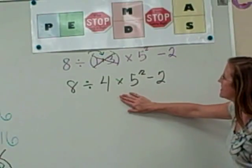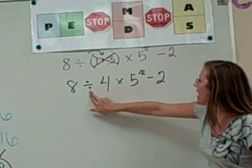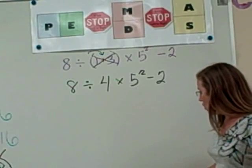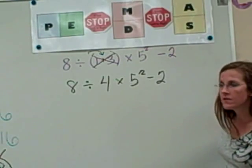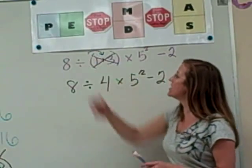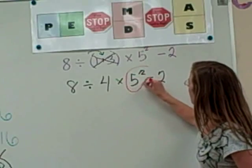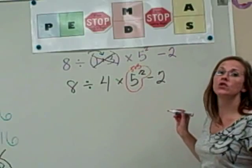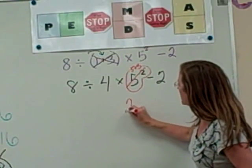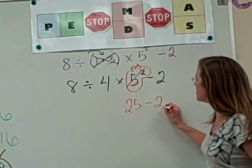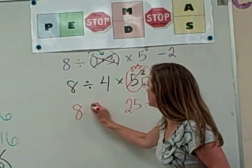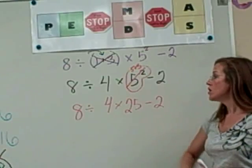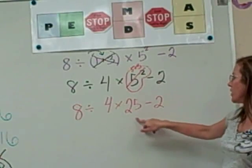So back to this, let's see here. We have 8 divided by 4 times 5 squared subtracting 2. We have done all of our parentheses and now we're going to go to the next letter, which is E for exponents. 5 squared is saying 5 times 5, which is 25. Make sure you rewrite that problem.